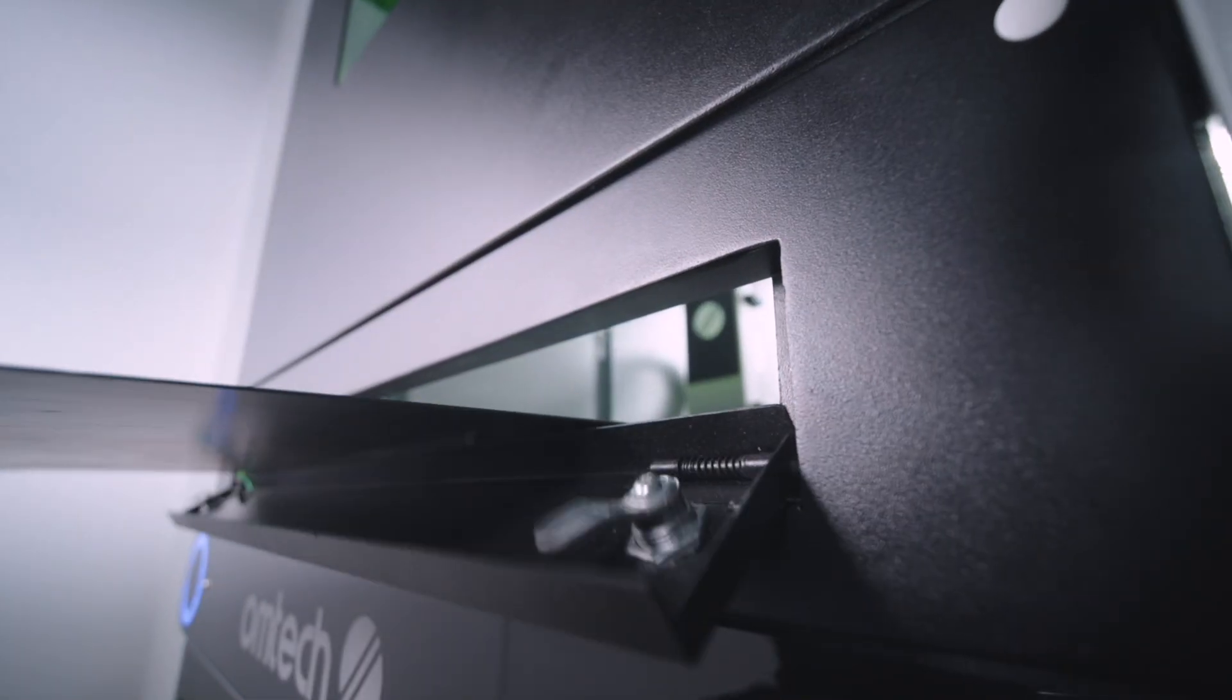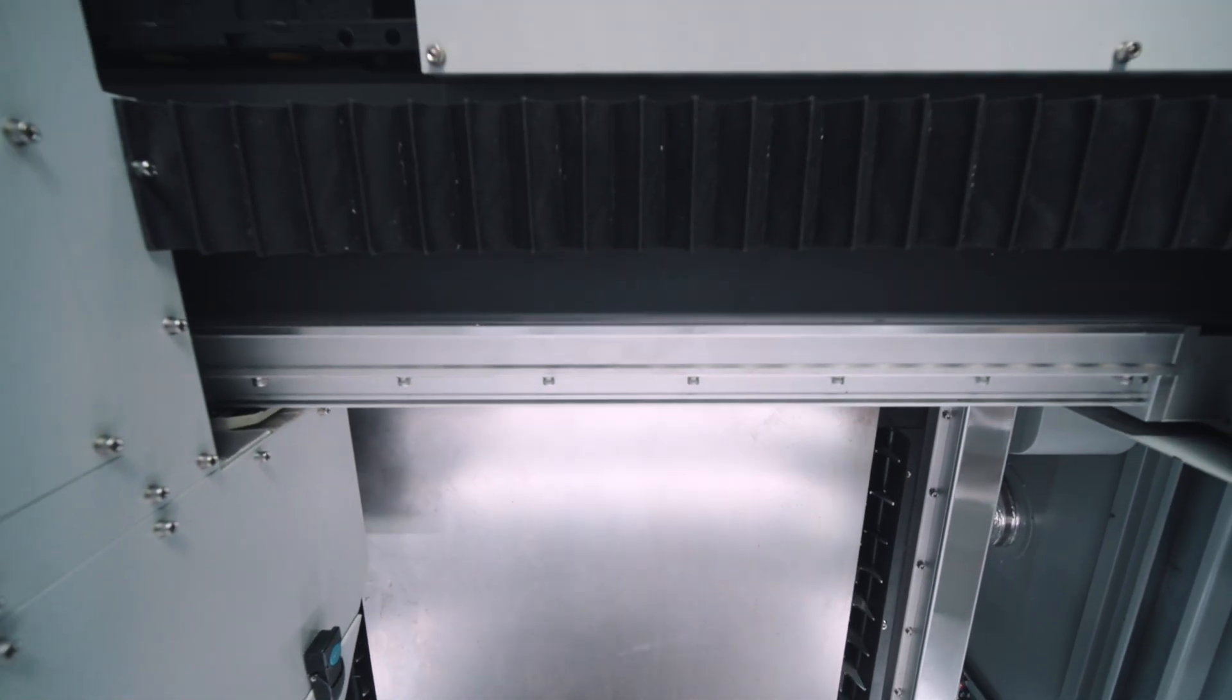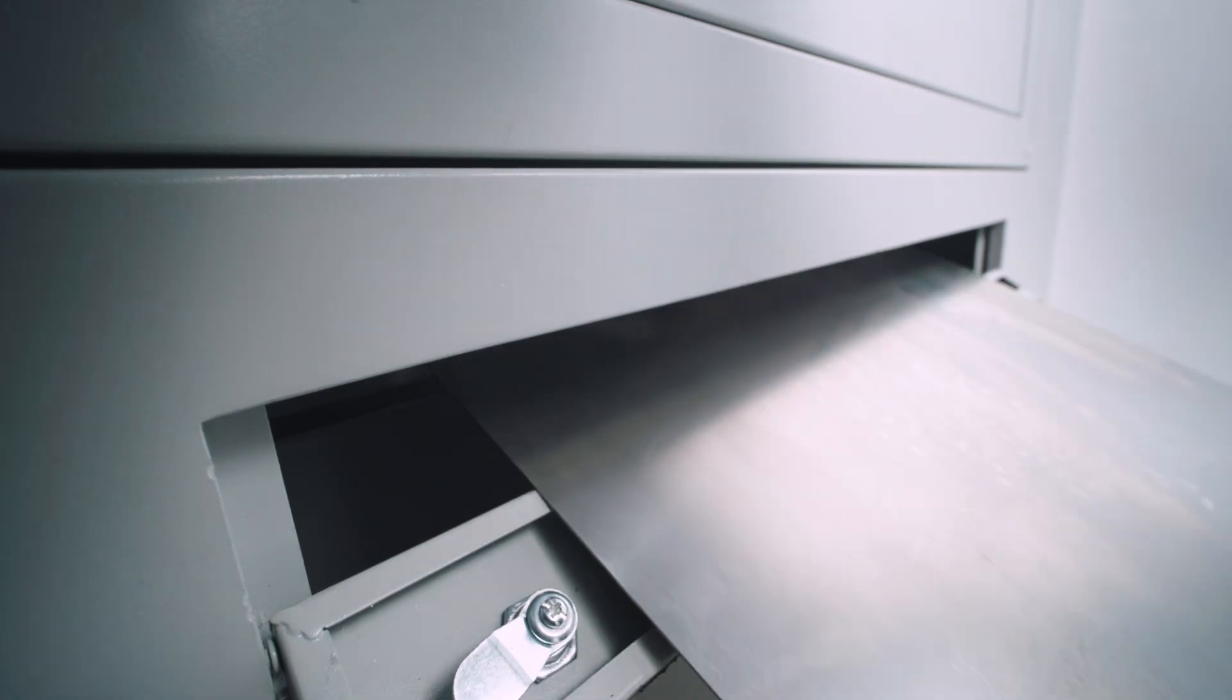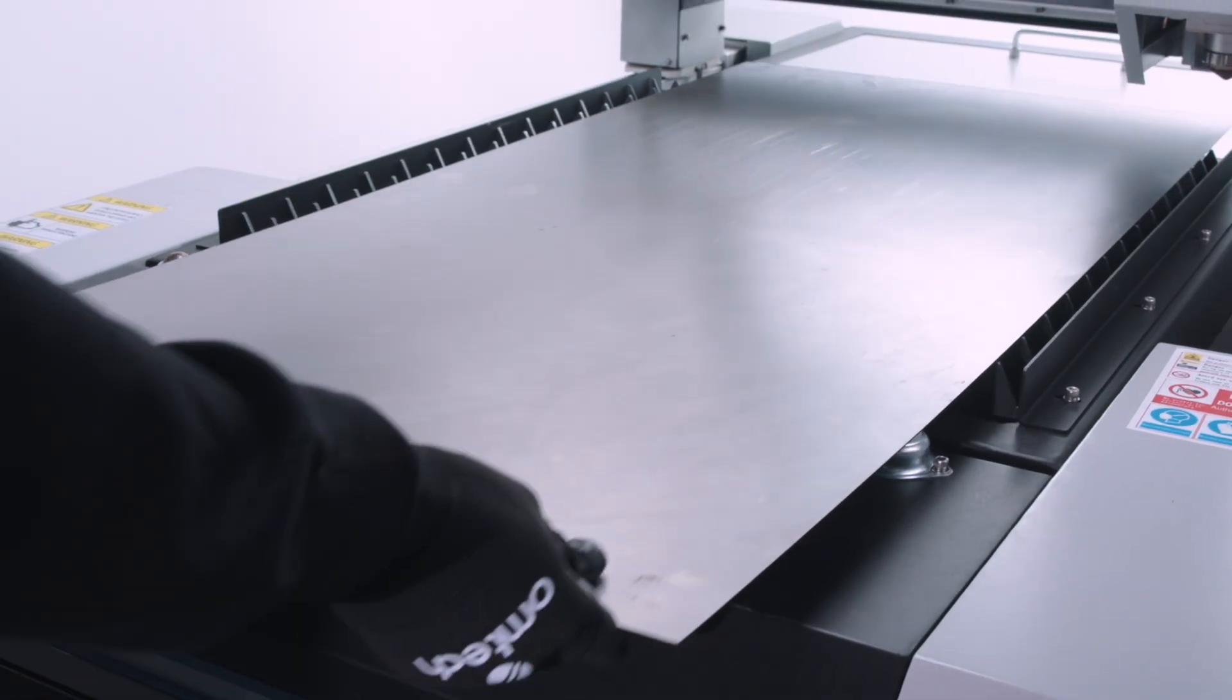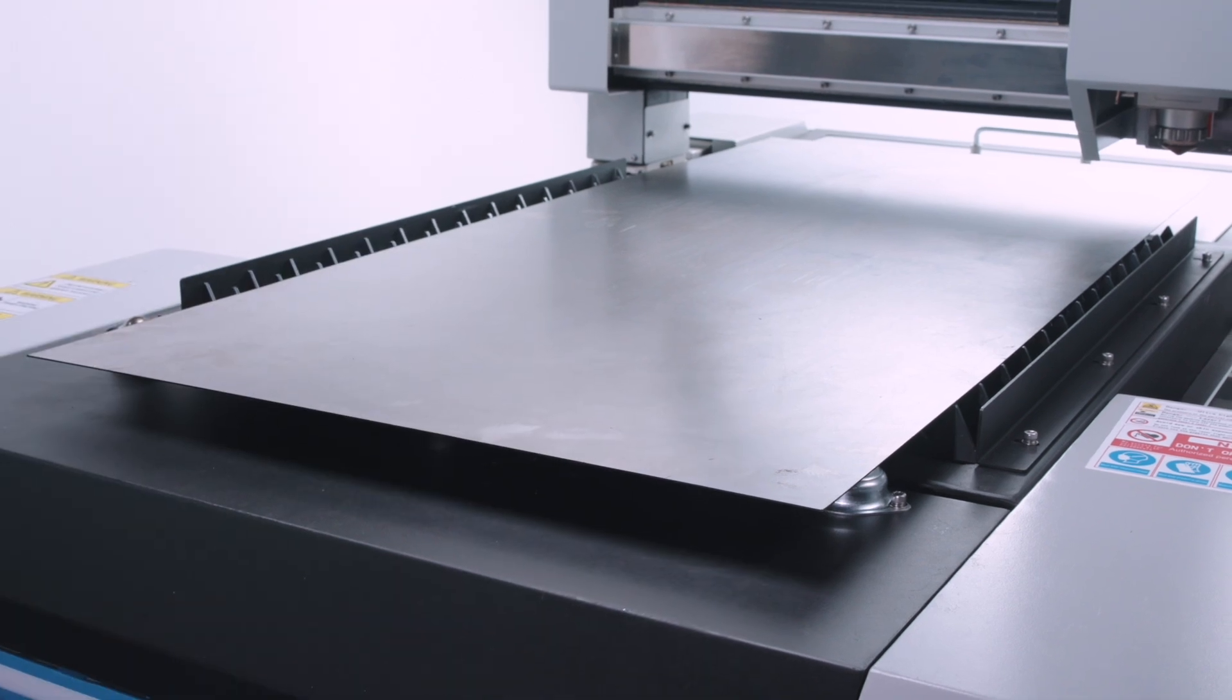Need to process long materials? FC22 handles it effortlessly with pass-through doors. Need to swap materials quickly? FC22C makes it simple with quick access to the work area.